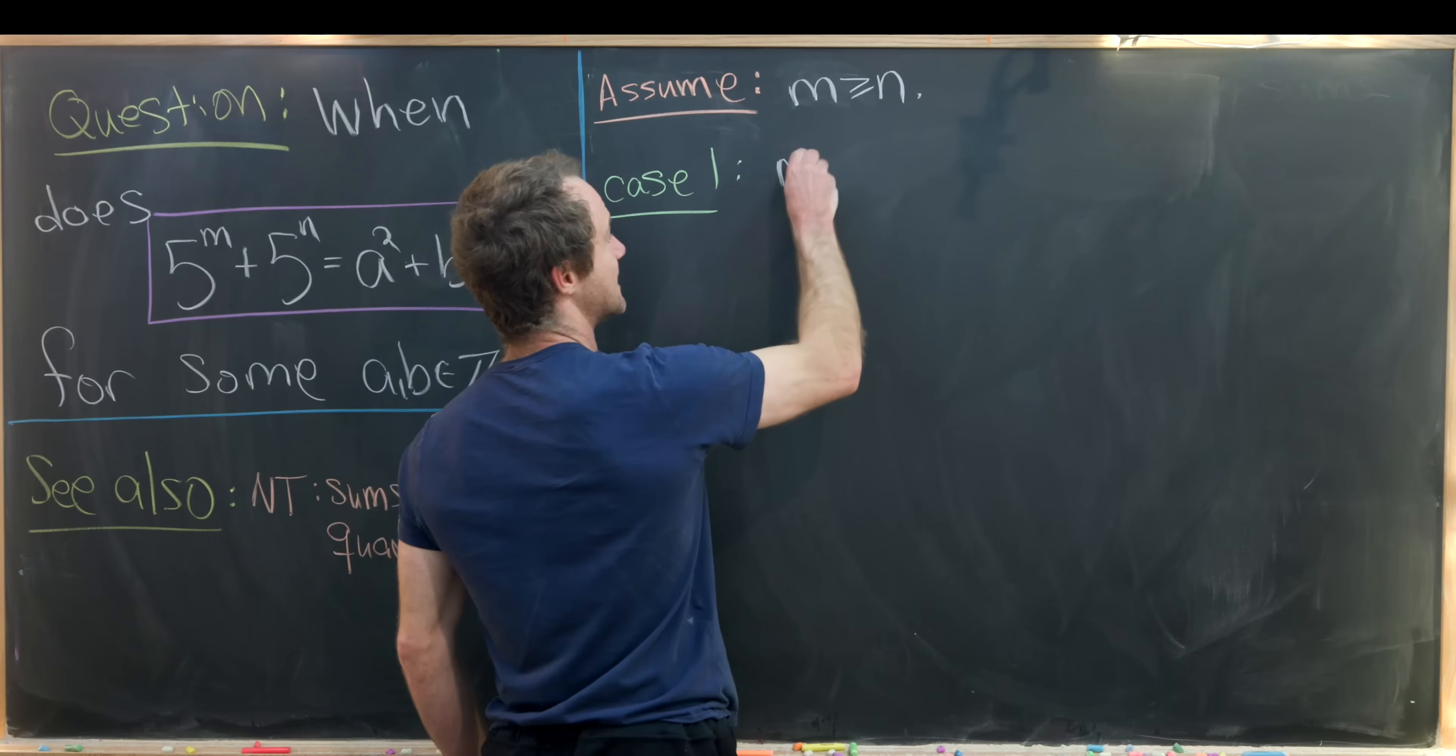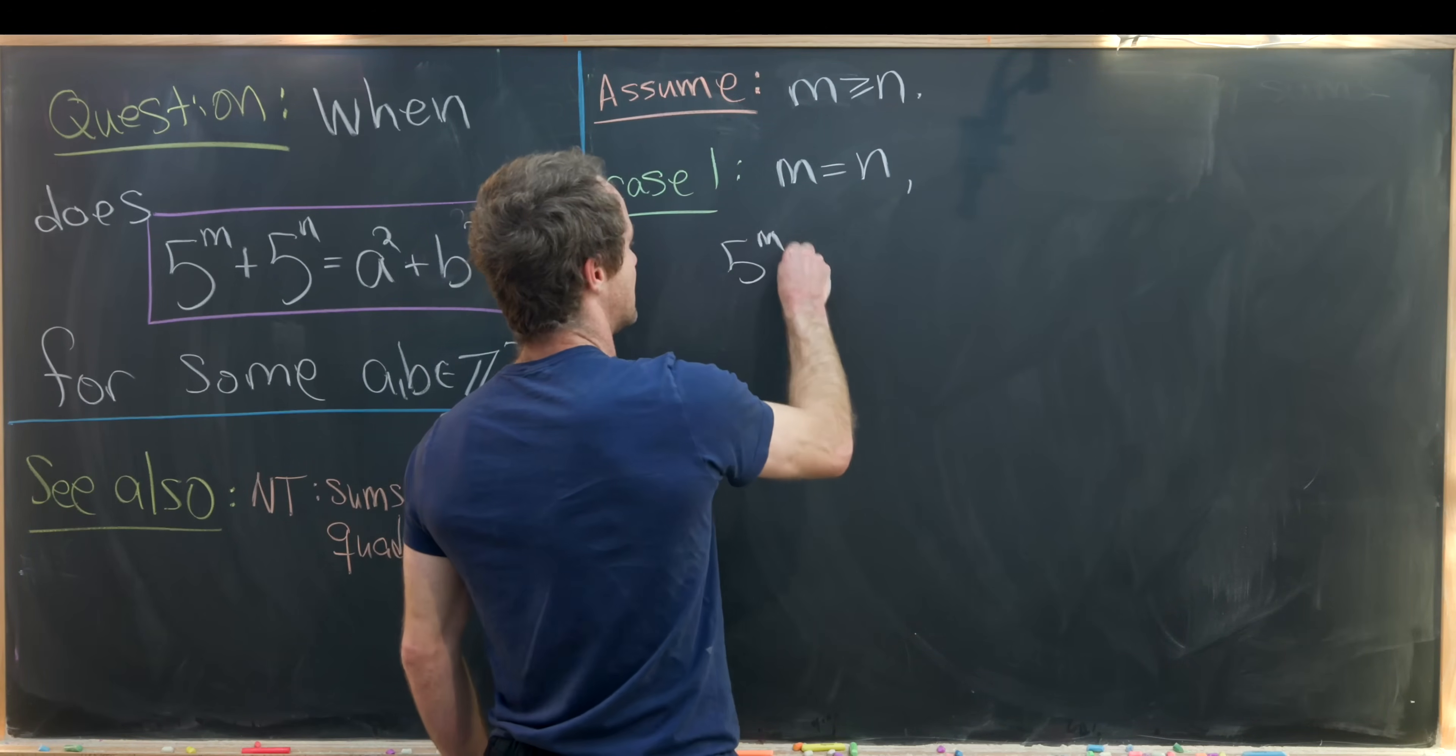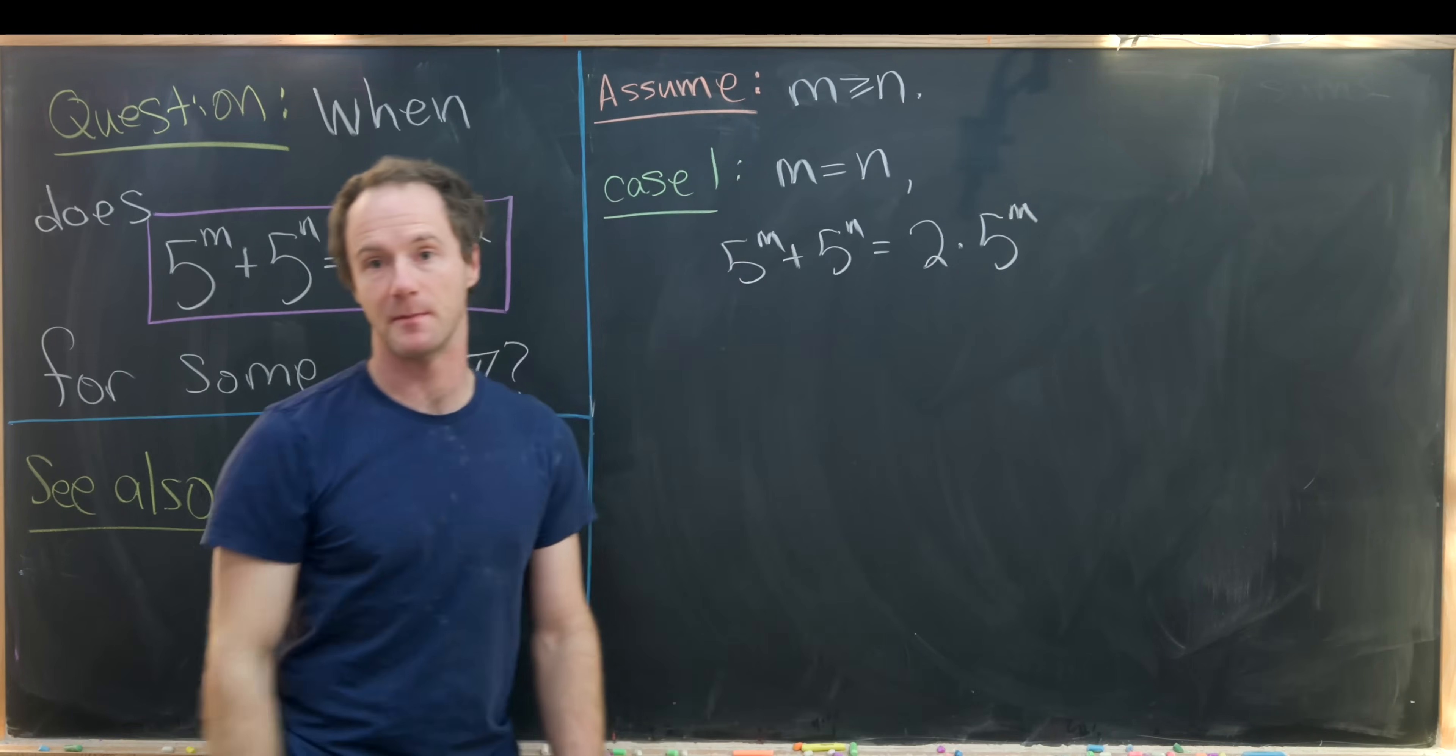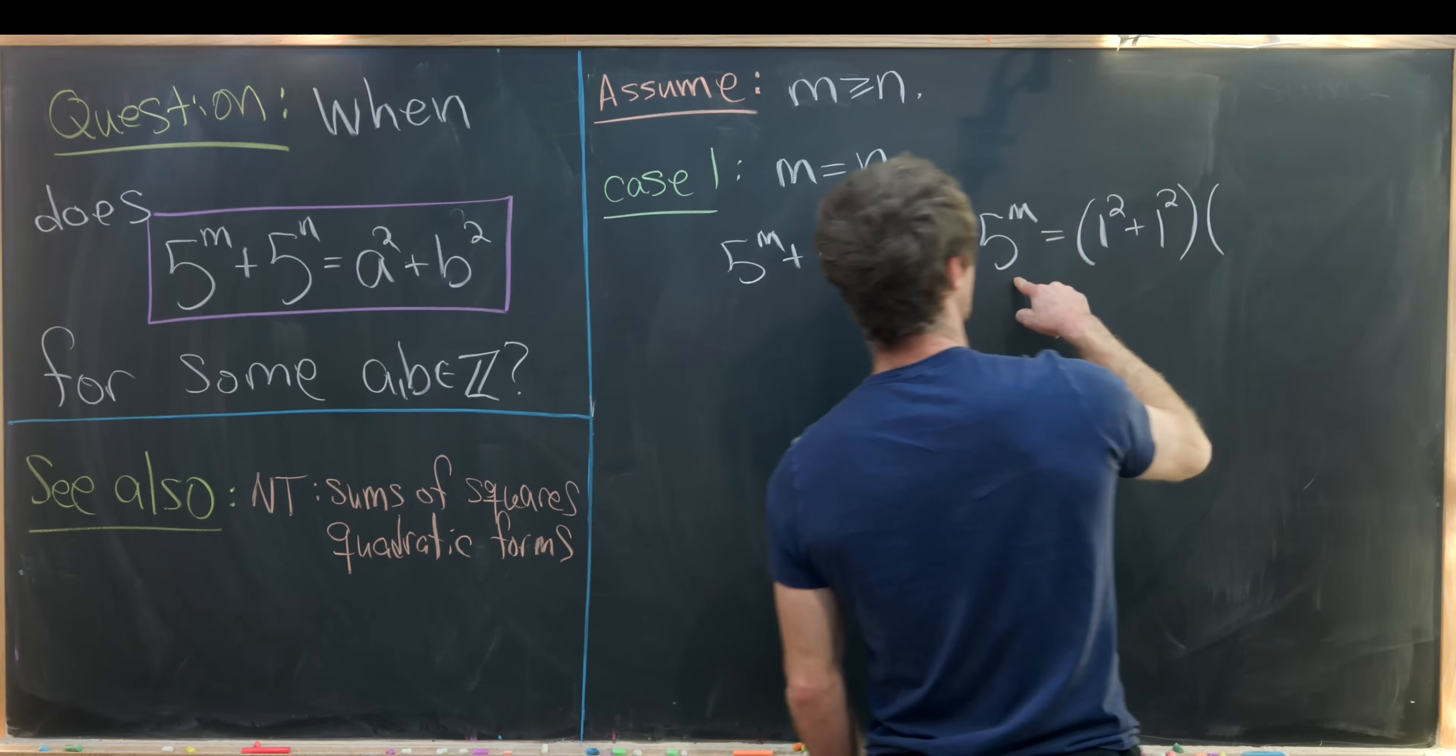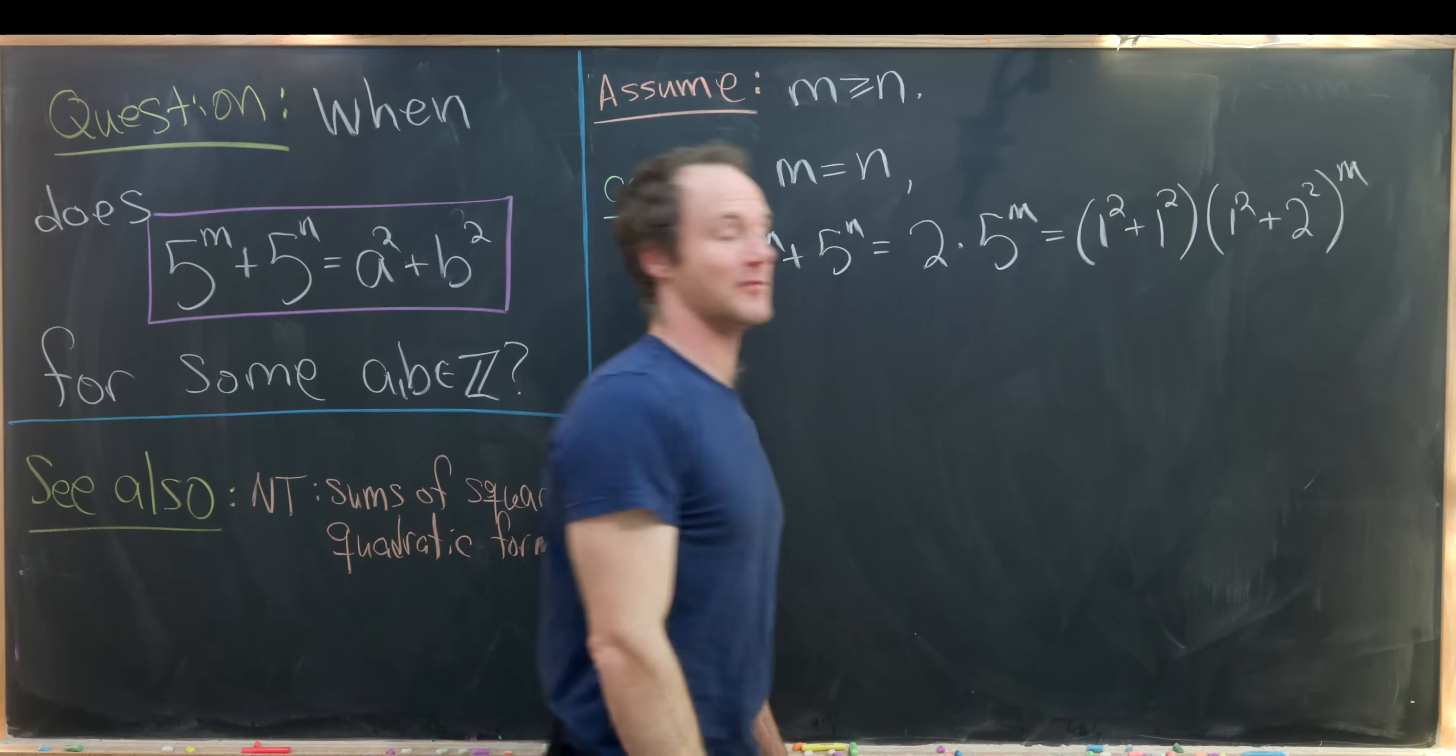So case number one is m equals n. So there we have 5 to the m plus 5 to the n is the same thing as 2 times 5 to the m. Well that's pretty clear because m equals n. But now let's write 2 as 1 squared plus 1 squared, and then we can write 5 as 1 squared plus 2 squared, and then that's to the m power.